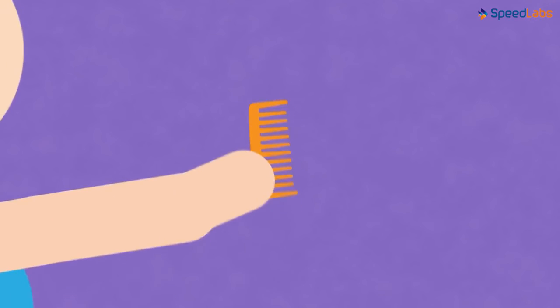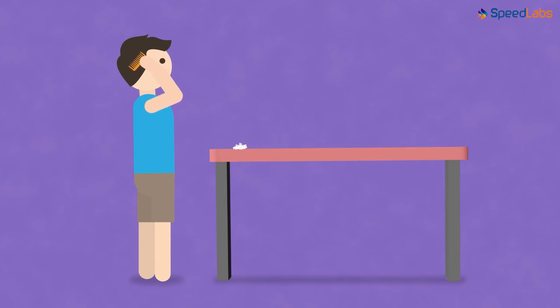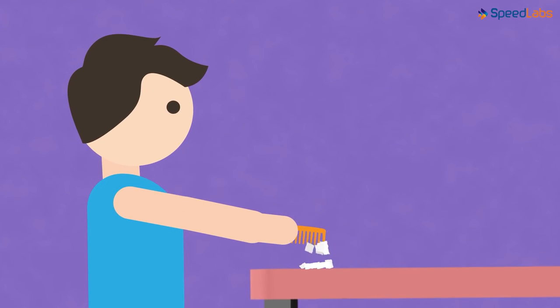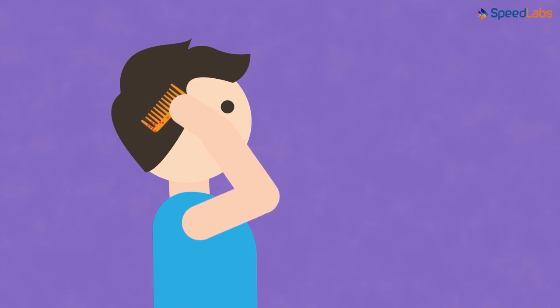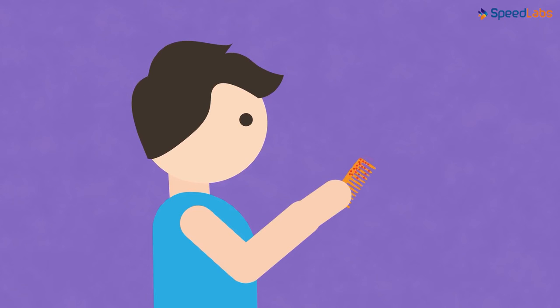You can also perform this experiment using a plastic comb. Rub your plastic comb on your dry hair and bring it near the pieces of paper. Here as well, you will see attraction between the two. After the rubbing process, the comb and your hair become charged bodies, and the charged comb attracts the pieces of paper. Remember this will only work if your hair is dry.